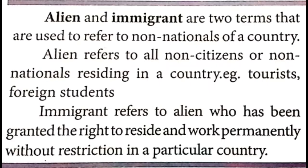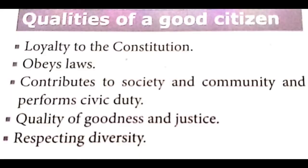Alien and immigrant are two terms used to refer to non-nationals of a country. Alien refers to all non-citizens or non-nationals residing in a country, for example foreign students and tourists. Immigrant refers to an alien who has been granted the right to reside and work permanently without restriction in a particular country. To be a good citizen, we should have qualities such as: loyalty to the constitution, obey laws, contribute to society and community and perform civic duty, quality of goodness and justice, and respecting diversity.